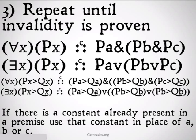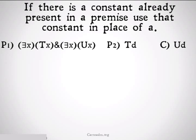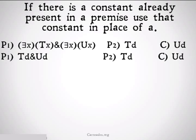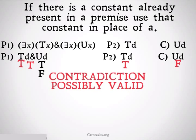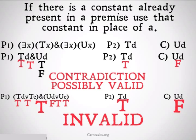Let's look at an example. Take the argument: there exists an x such that x is T, and there exists an x such that x is U; D is T; therefore D is U. Because the constant D is already present in a premise, we use D rather than A. We see this leads to a contradiction, so it's possibly valid. Moving to two things in the universe, using D and E as our two constants, when we plug this into a truth table and assume the premises are true and the conclusion false, it works out — so this is an invalid argument.